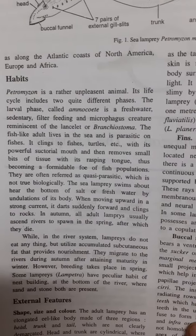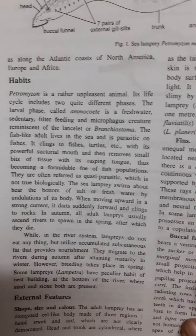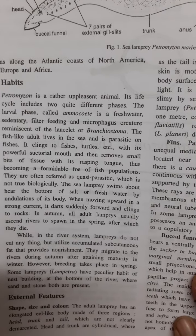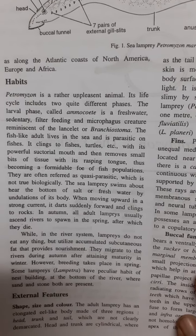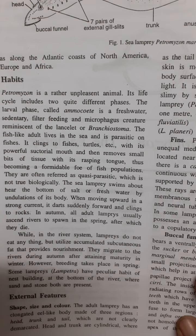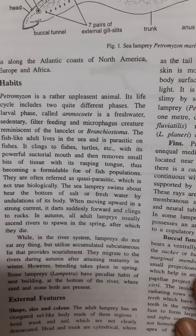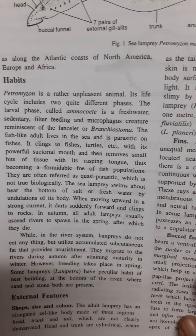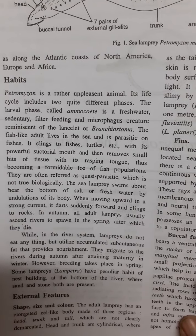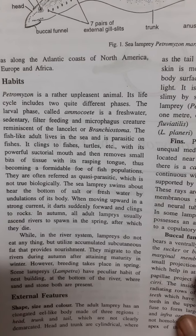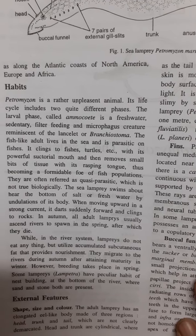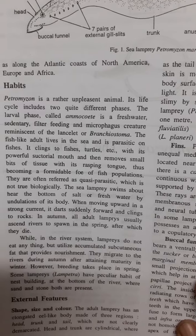The adult is found in the sea and is a parasitic animal. Fishes and turtles are caught by its powerful suctorial mouth, and its rasping tongue cuts off the tissues.